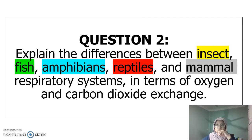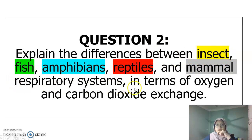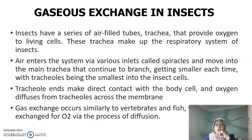Moving on to the next part, we need to explain the differences between insects, fish, amphibians, reptiles, and mammals' respiratory systems in terms of oxygen and carbon dioxide exchange. In this question, each organism will be explained in turn.